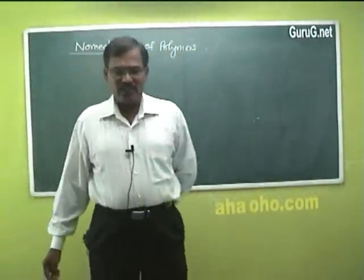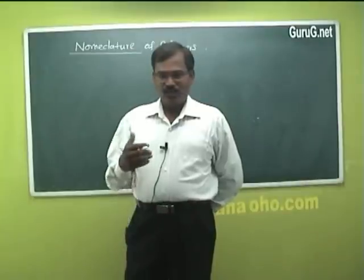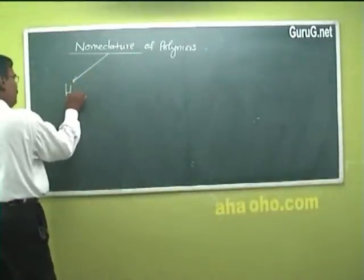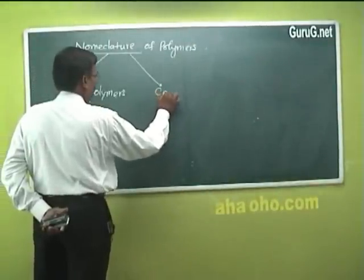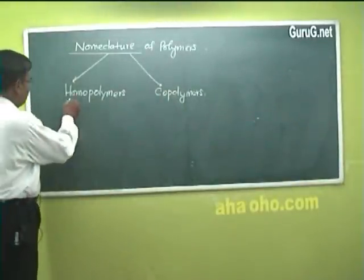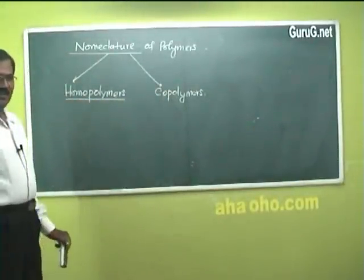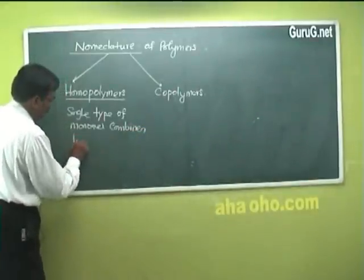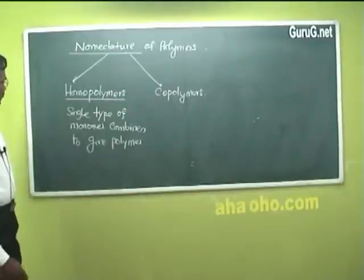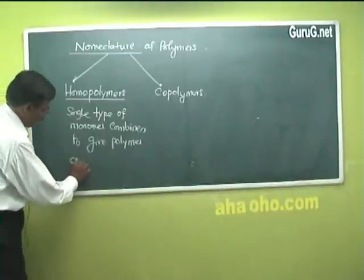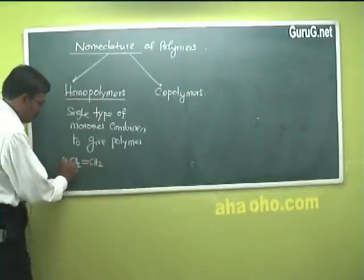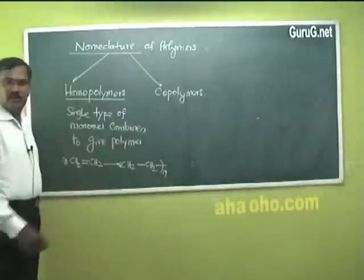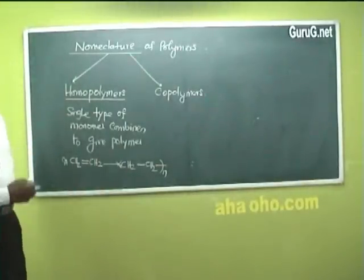Now let us see how polymers are classified. There are two broad categories: homopolymers and copolymers. In homopolymers, the monomers combined to give the polymer are of a single type — one type of monomer combines to form the polymer. Ethylene is the best example: a single type of monomer combines to give the polymer polythene. So polythene is an example of a homopolymer.